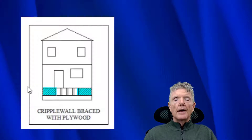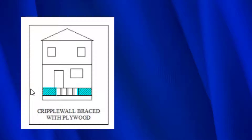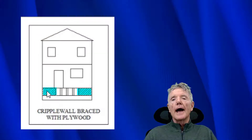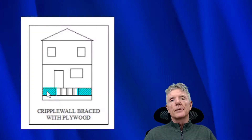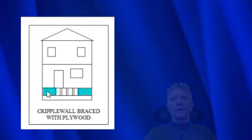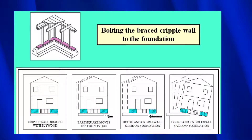Preventing the cripple wall from collapsing is actually pretty simple — you need to put plywood on it. As you can see in this house, we have plywood on this end and we put plywood over here. Notice we don't have to put plywood along the entire cripple wall; the engineering calculations behind FEMA P-1100 tell us exactly how much plywood we need, and we'll go into that in another video.